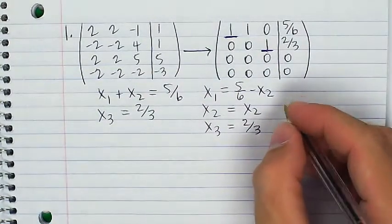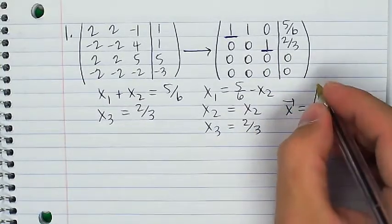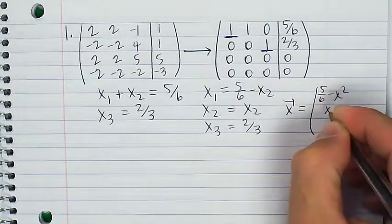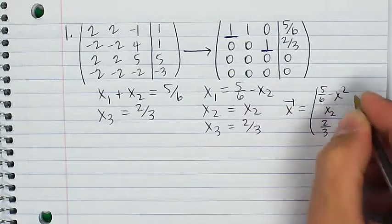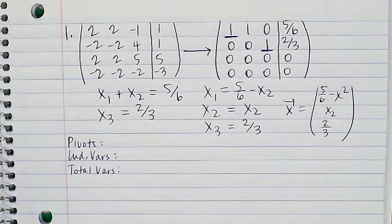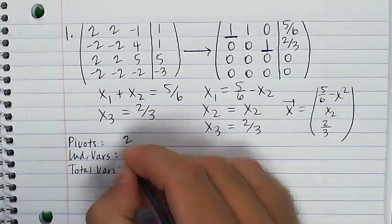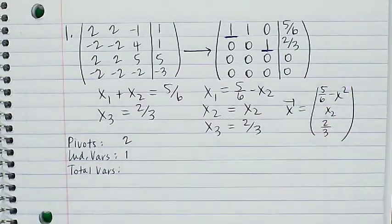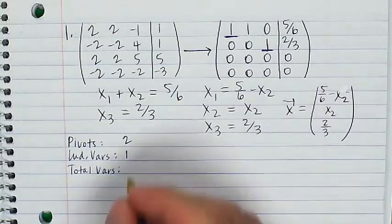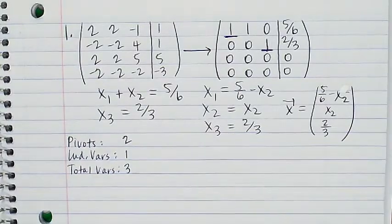Right here and right there, those are my pivots, they're leading ones. Okay, I had a total of three variables and two pivots, so I think I'm going to have one independent variable. So, I'm going to write down the solution space, so x1 plus x2 equals 5 sixths, and x3 equals 2 thirds. So, I'm going to solve for x1 in terms of x2, x1 is equal to 5 over 6 minus x2. x2 can be whatever it wants, and x3 is 2 thirds.